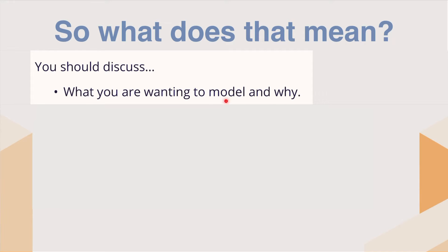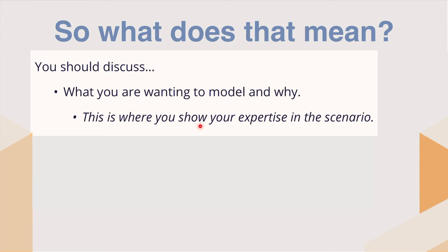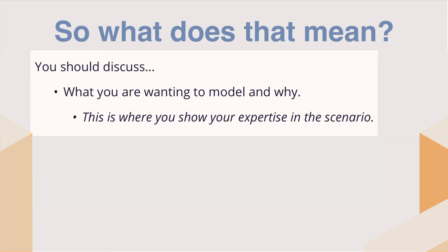What are you going to include in your IA? You should discuss what you are wanting to model and why. This is part of the personal engagement — this is where you show your expertise in the scenario. One of the things I like to have my students read is the horse jumping IA example that IB has released. When you read through that IA, you can tell that person knows a lot about horse jumping. You don't have to say 'I've always loved horse riding.' It should come through in your writing, and that's where your personal engagement will come through.